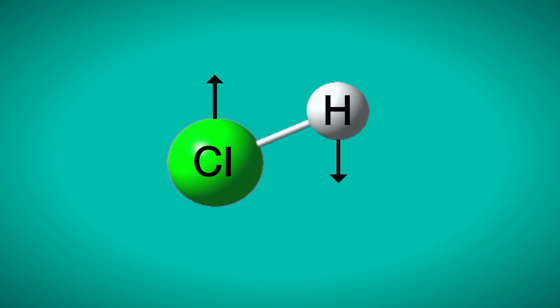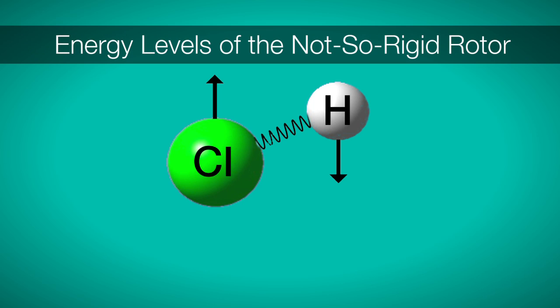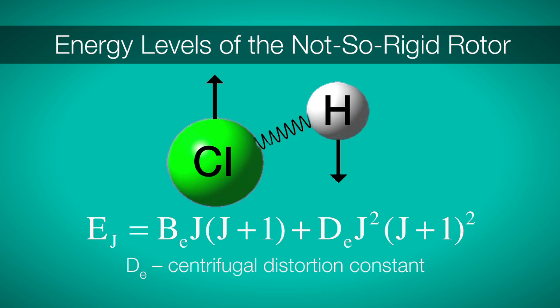The rigid rotor is a simple model for rotations of a molecule, but there's a problem. Bonds are not rigid. This means we have to refine our model. In reality, bonds act similar to springs, so let's replace our rigid bond with a spring. By making this change, we also change the energy expression for our system. To account for the flexibility of bonds, we add the centrifugal distortion correction. Our refined expression is shown here, where DE is the centrifugal distortion constant.